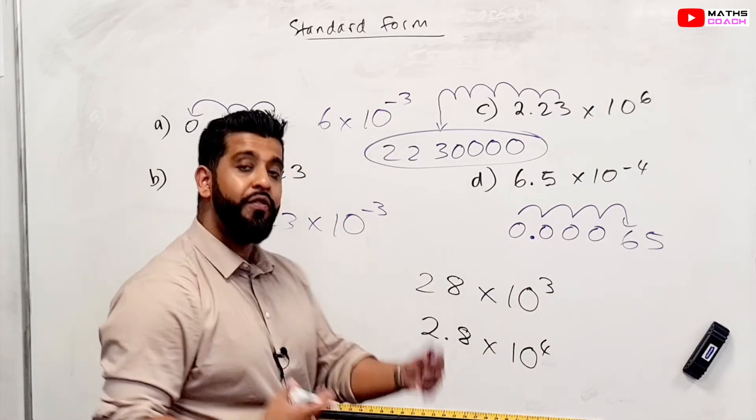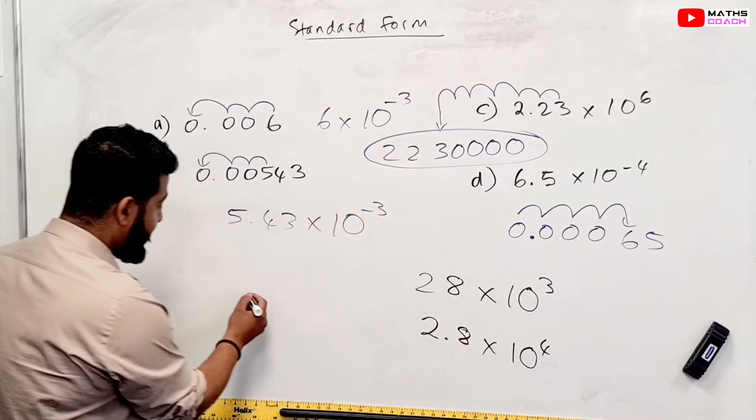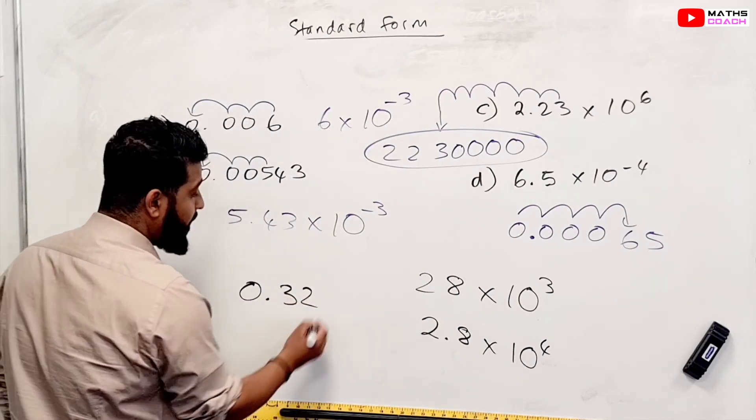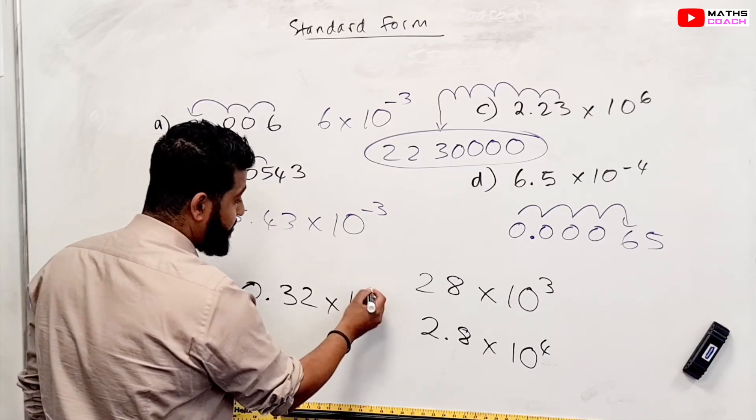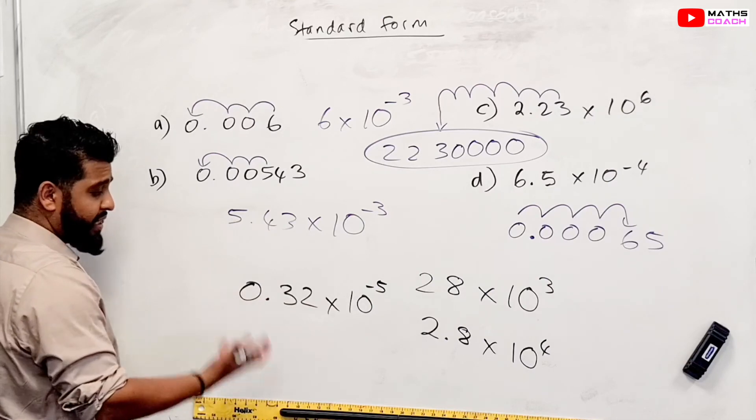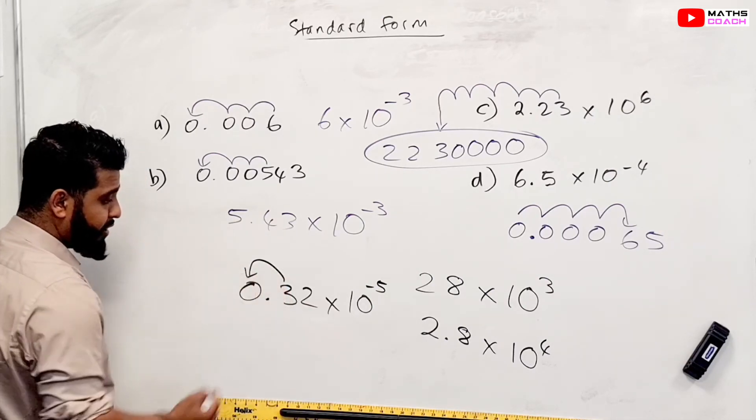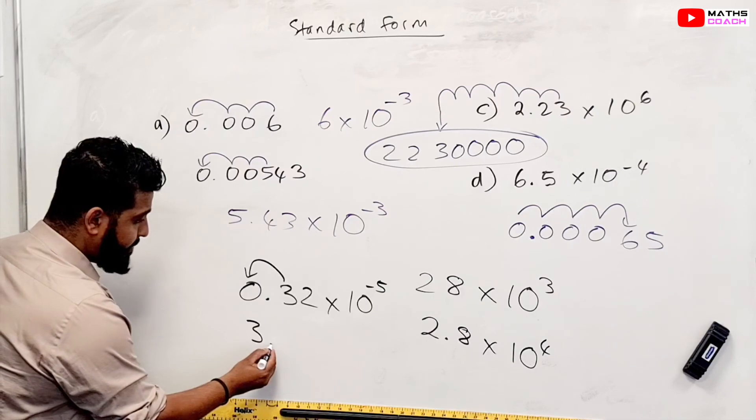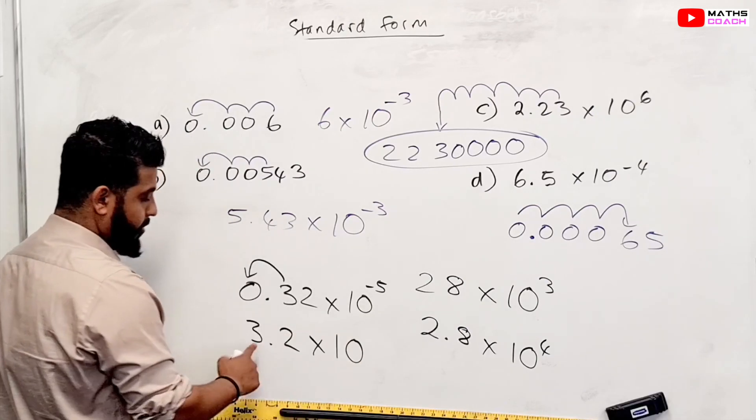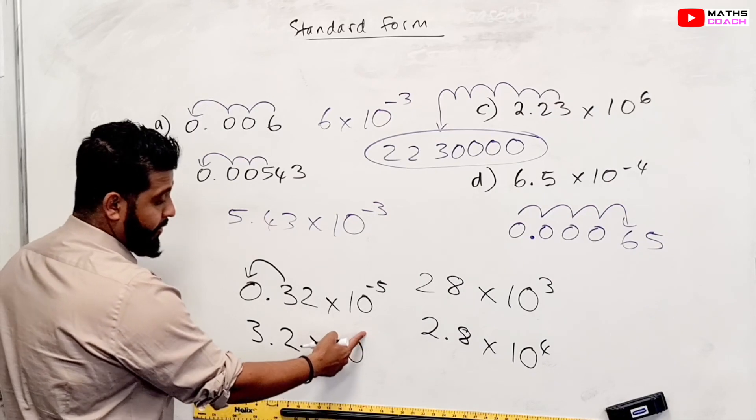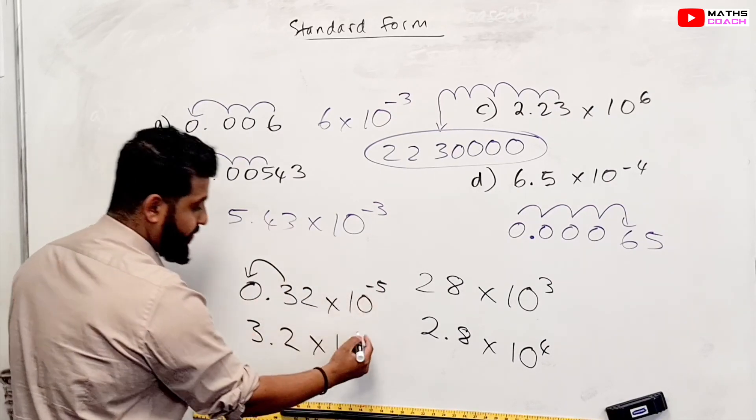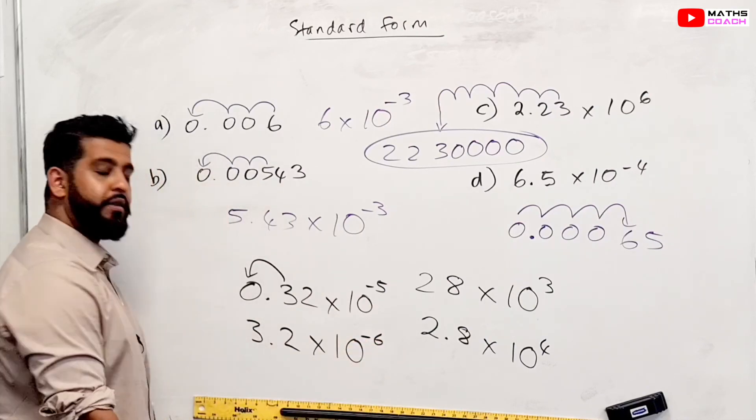And this is the same with decimals as well. If you get given a decimal, for example, 0.32 times 10 to the power of minus 5, for example, this is not in standard form. So you need to make this 3, come into this position right there. So it becomes 3.2 times 10 to the power of something. So what are you going to do? You are going to correct this. So because you're moving this way, you're going to take away another power from there to give you minus 6.